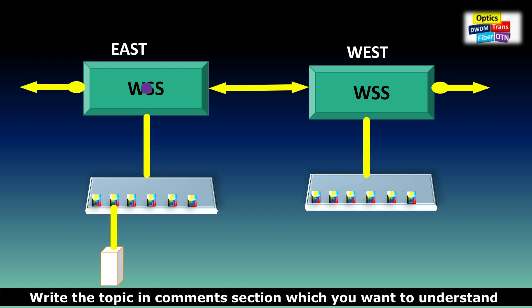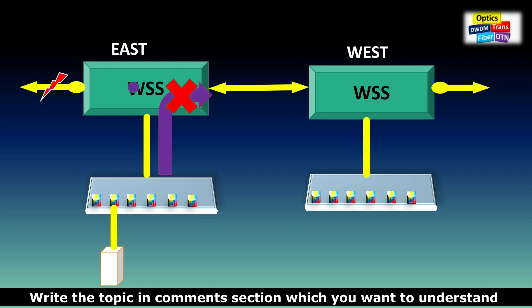Using same example, what happens when there is a fiber cut in the east direction? Service will be interrupted. With reconfiguration functionality, we can reconfigure the connection. But due to WSS architecture limitation, this signal cannot be sent to west direction, which we explained in another video.